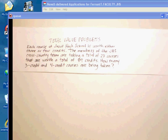This kind of particular problem is called the total value problem, in contrast to what are called mixture problems. You solve them similarly, but I'm just going to take a slightly different approach for each one. This particular problem says: each course at Jesuit High School is worth either three or four credits. The members of the JHS cross-country team are taking a total of 27 courses that are worth a total of 89 credits. How many three and four credit courses are being taken?